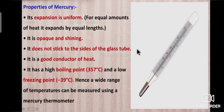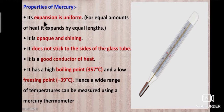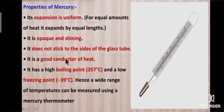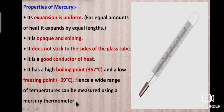Let's see the properties of mercury. Mercury's expansion is uniform — for equal amounts of heat it expands by equal lengths. Mercury is opaque and shining. It does not stick to the sides of the glass tube. It is a good conductor of heat. It has a high boiling point of 357°C and a low freezing point of minus 39°C, so a wide range of temperatures can be measured using a mercury thermometer.